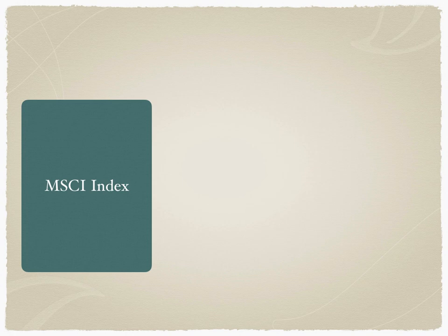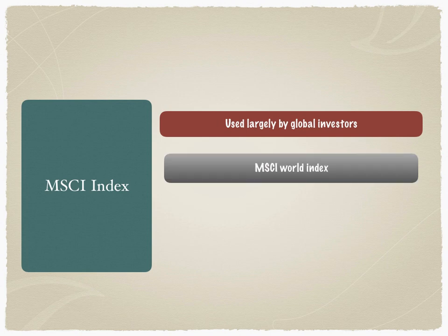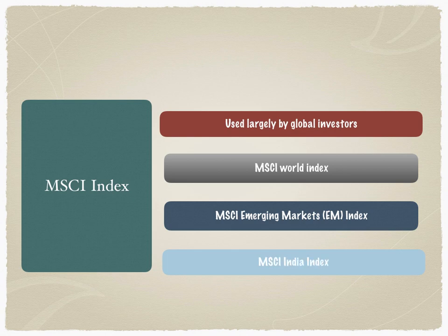MSCI — the Morgan Stanley index — is used largely by global investors, those who invest anywhere in the world. Unlike DJIA and S&P 500, which are largely used by US-based asset management companies, the MSCI index is more driven towards global investors because they compare the global performance of asset classes. The different kinds of indices announced by MSCI include the MSCI World Index, MSCI Emerging Markets Index, MSCI India Index, and many more.